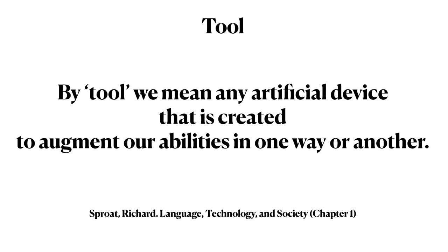In Chapter 1 of Language, Technology, and Society, Richard Sprout defines tool as follows: By tool, we mean any artificial device that is created to augment our abilities in one way or another. He then continues, noting, humans are not the only tool-building species, but our technology is clearly orders of magnitude more complex than anything known from non-human animals.